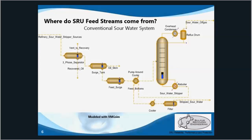All refineries also have a sour water stream, and this is routed to a sour water stripper, which removes H2S and NH3, which is ammonia. Sour water strippers include a regenerator or stripper, which removes H2S and NH3 from solution in the form of acid gas. This acid gas stream contains approximately equal parts of H2S, NH3, and H2O, as well as other trace contaminants, which we hope to be minimized.